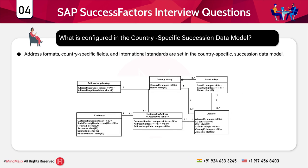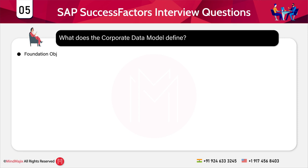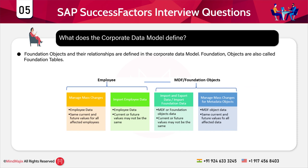The next question is: what is configured in the country-specific Succession Data Model? Here you can configure things such as address formats, country-specific fields, and international standards. The next question is: what does the Corporate Data Model define? Foundation objects and their relationships are defined in the Corporate Data Model.